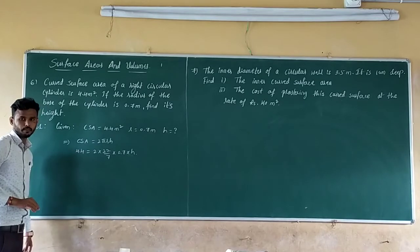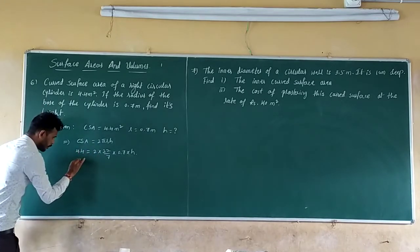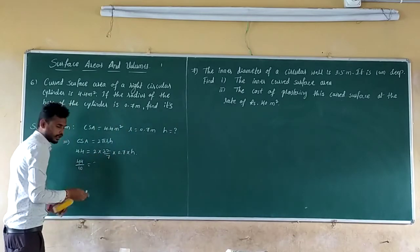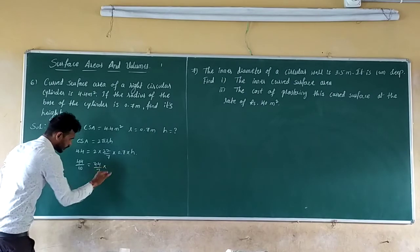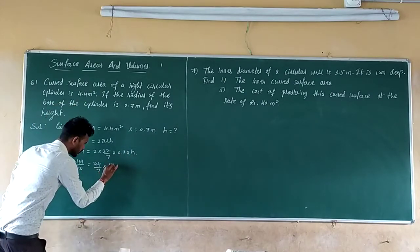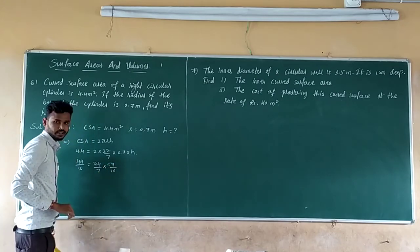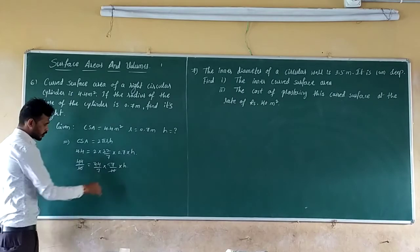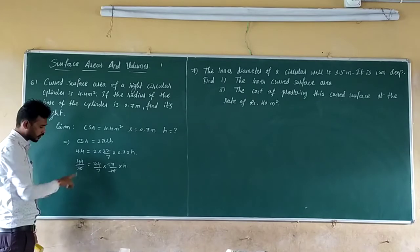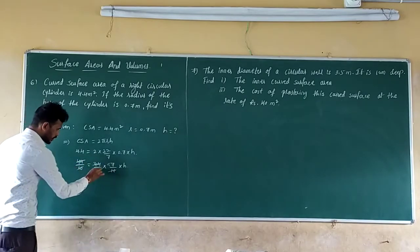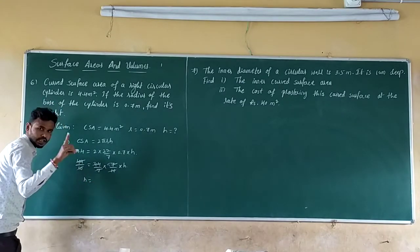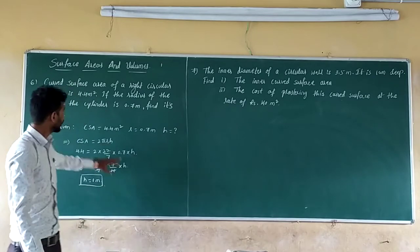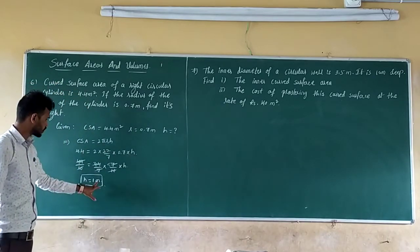Convert decimals to fractions for easier calculation. 4.4 becomes 44/10. So 44/10 equals 2 into 22/7 into 7/10 into h. Here 10 and 10 cancel, 44 and 44 cancel, 7 and 7 cancel. So h equals 1. Therefore the height of the right circular cylinder is 1 meter.